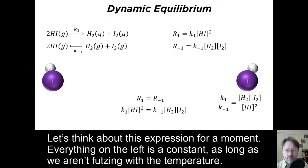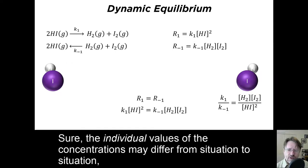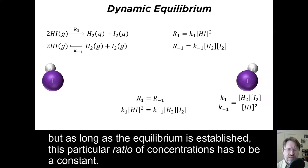Let's think about this expression for a moment. Everything on the left is a constant, as long as we aren't futzing with the temperature. This means that the right-hand side is also a constant. Sure, the individual values of the concentrations may differ from situation to situation, but as long as the equilibrium is established, this particular ratio of concentrations has to be a constant.